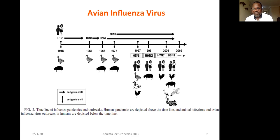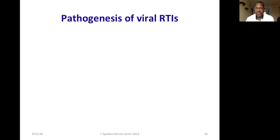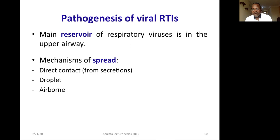The main reservoir of respiratory viruses is the upper airway. Spread occurs by three ways: direct contact from secretions, droplets, or airborne transmission. The difference between droplets and airborne is mainly the size of the particle. During droplet transmission, particles are large — above 10 micrometers in diameter — so they cannot travel long distances. During airborne infection, particles are smaller than five micrometers, can remain suspended in air, and can travel long distances.